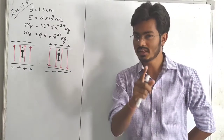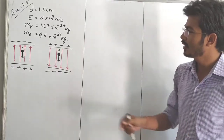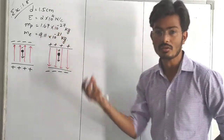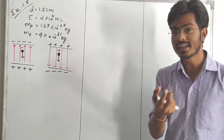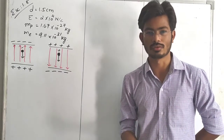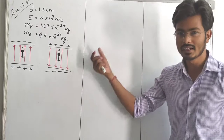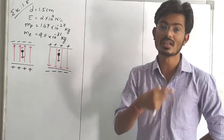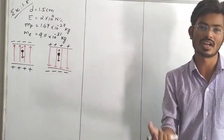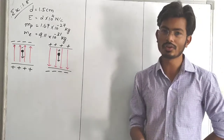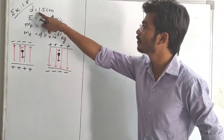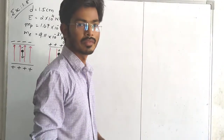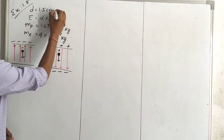Now regarding case number one, we have to find out the time of the electron as well as the time of the proton. For that we have some given data. D is equal to 1.5 centimeter, which is equal to 1.5 into 10 raise to minus 2 meter.